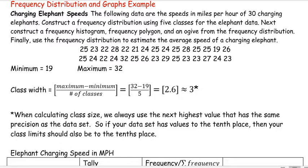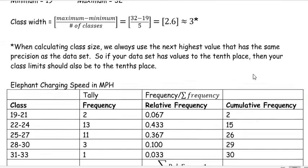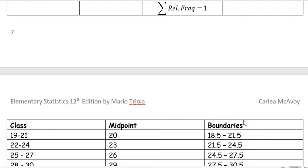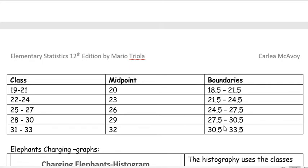We were given a data set and told to break this up into five classes. The minimum value was 19 and the maximum was 32. From that we calculated our class width, set up the tally and frequency, calculated the relative frequency, the cumulative frequency, and then the midpoints and the boundaries.